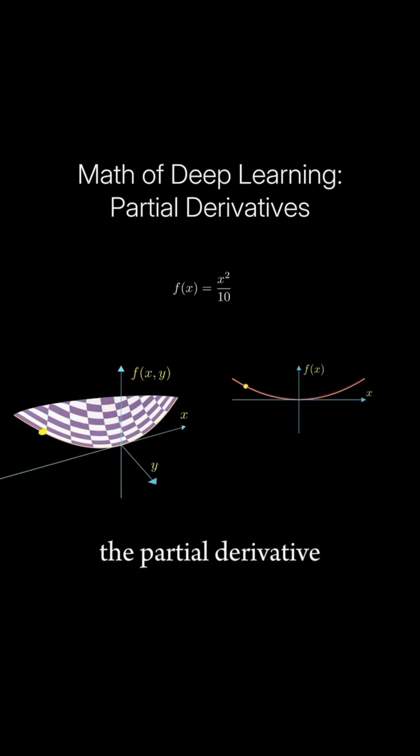Geometrically, the partial derivative with respect to x represents the slope of the graph of f at x.